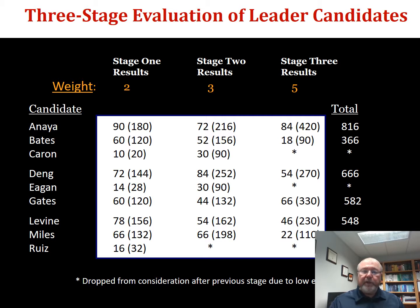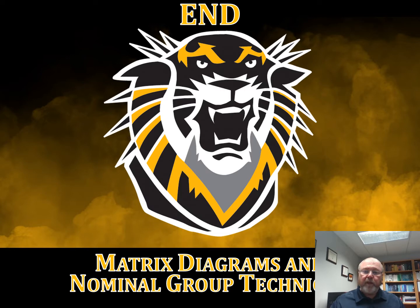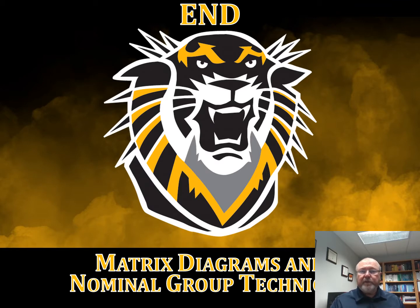This is an example of using the nominal group technique in conjunction with L-shaped matrices — the body of the table represents the L-shaped matrix. Matrix diagrams find relationships among factors or traits. Nominal group technique is used to arrive at group consensus as a group decision-making tool. Thanks very much, and we'll see you again for some other topic.